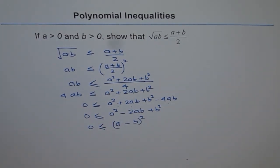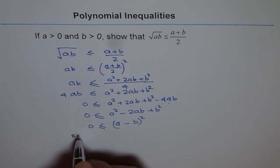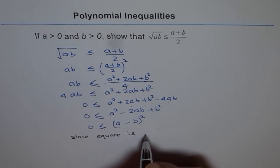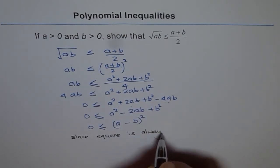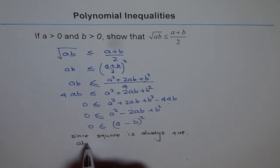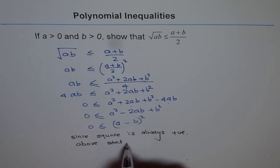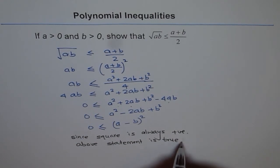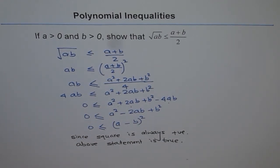Is it true? That is the question. Yes, it is. Square of a number is always positive. Since square is always positive, above statement is true. So therefore, we can say the square root of AB is less than or equal to A plus B over 2. Above statement is true.